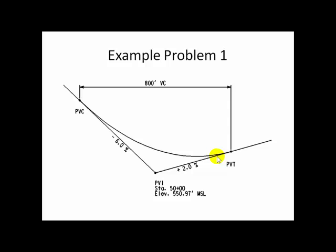For an example problem, I want to give you a vertical curve that is 800 feet long. It is a symmetrical curve. Its PVI occurs at 50 plus 00, and that PVI has an elevation of 550.97. G1 is minus 6%. G2 is a positive 2%.